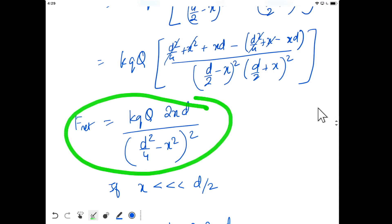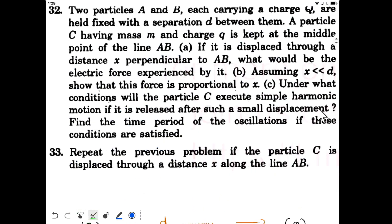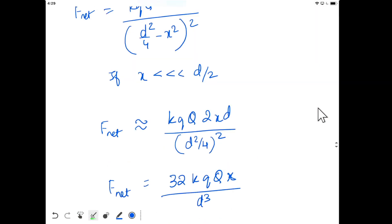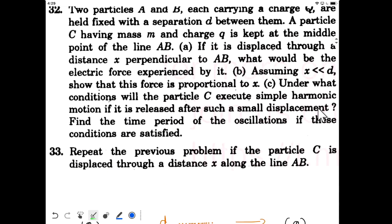Part b is asking, assuming x much smaller than d, show that this force is proportional to x. We applied the assumption and got that F_net depends on x directly. Now coming to part c: under what conditions will particle C execute simple harmonic motion if it is released after such a small displacement?